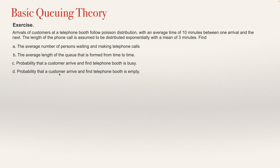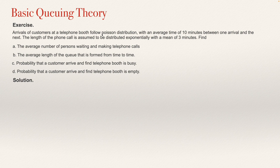For answering this, I will be using the basic queuing theory. I will be taking into account that the first distribution is a Poisson distribution, so the distribution that models the number of customers arriving at this telephone booth is a Poisson distribution. That means that the time between the arrivals will be exponentially distributed. There is another random variable — the time the customer spends on the call — and this is also exponentially distributed.